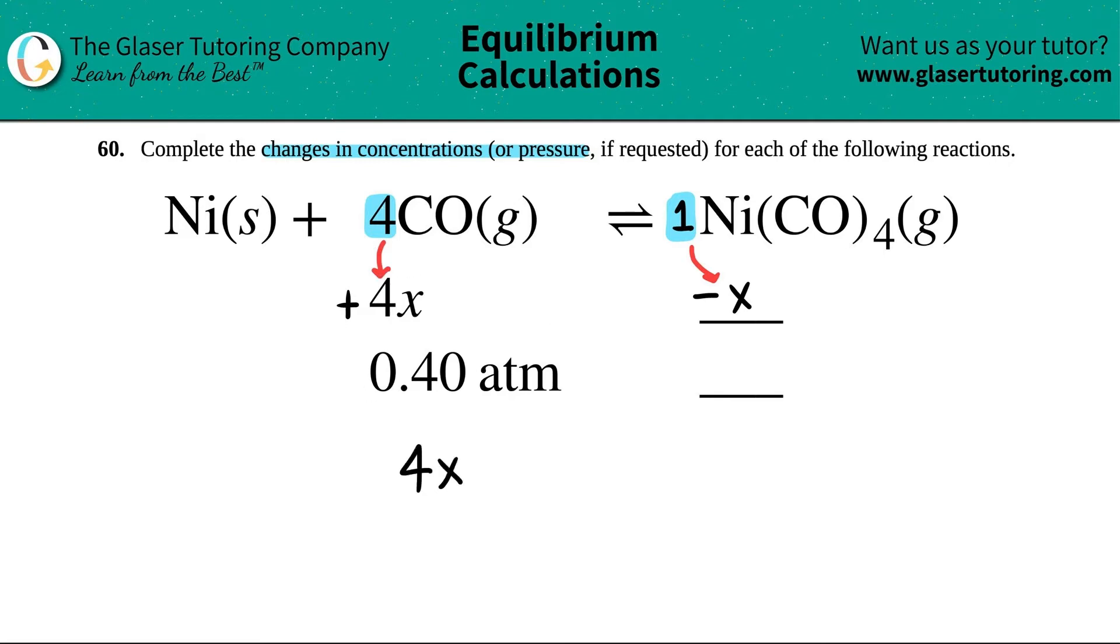If 4x equals 0.40, 4x equals this number. I can figure out what x is by just dividing by 4.